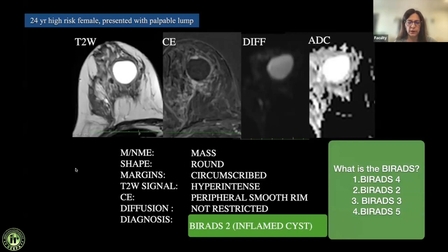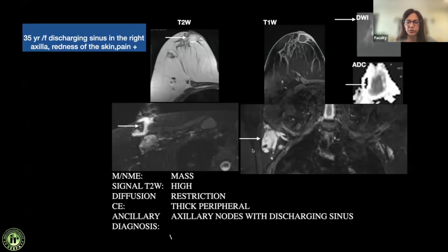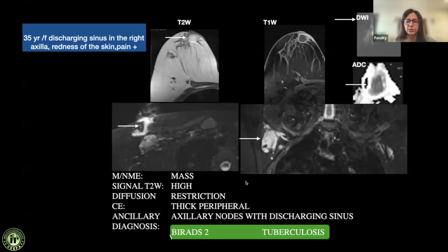Case 2: A 35-year-old female with a discharging sinus in the right axilla, skin redness, and pain — clinical history pointing towards benignity. Again a T2-bright lesion with peripheral enhancement, fairly circumscribed. On diffusion, the T2-bright component shows very dark ADC signal, indicating high-density contents consistent with an abscess — not solid, as there is only peripheral enhancement. Ancillary findings include a sinus tract and matted nodes. This is BI-RADS 2, confirmed as tuberculosis.